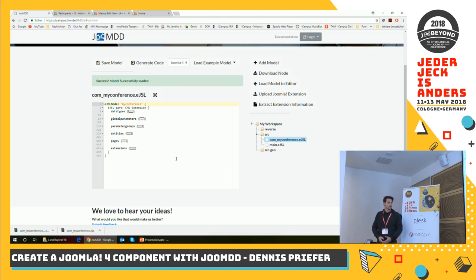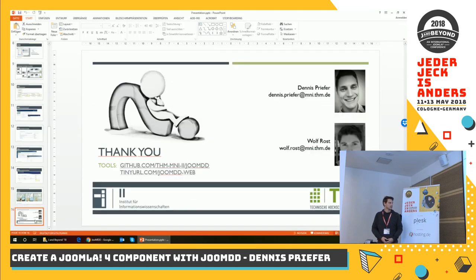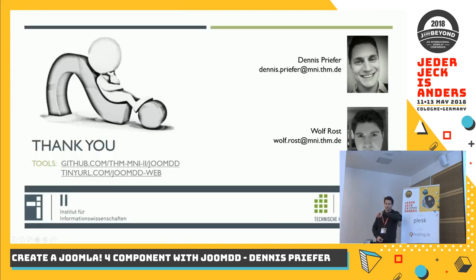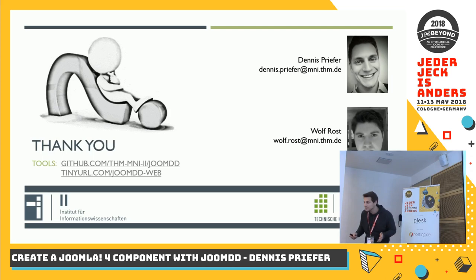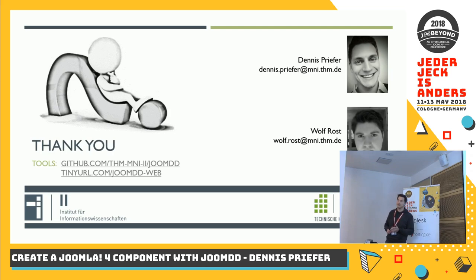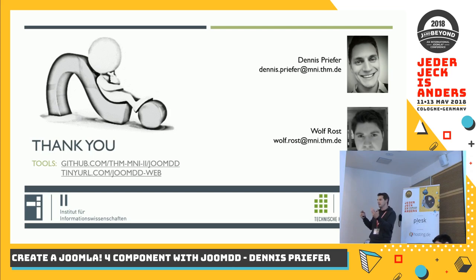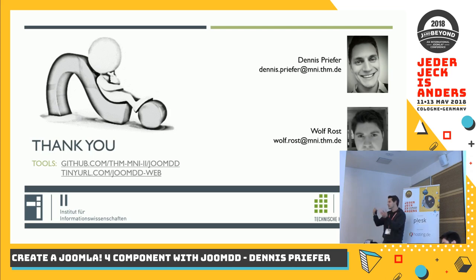Since we have lunch afterwards, we tried to stay within 30 minutes and I think we did it almost. If you change a field type, the code is generated completely anew. Every field type change which affects the database requires reinstalling the component so the update can be done during installation. Changes which do not affect the database can be directly copied to the existing extension. It can handle many-to-many relations — what we generate is a new page where you see the contents of the relation table, not just the keys, but what the keys are referring to.